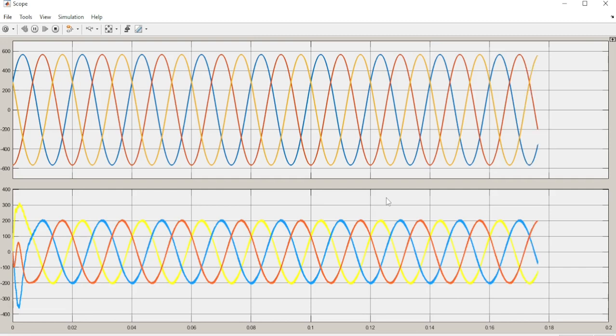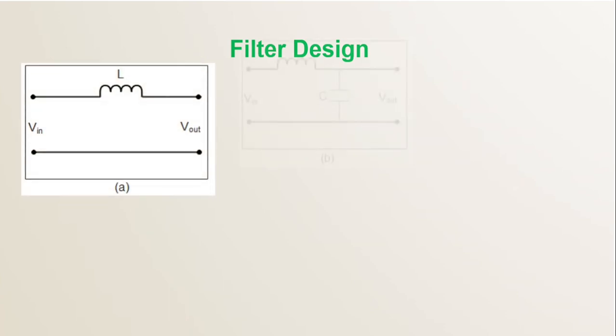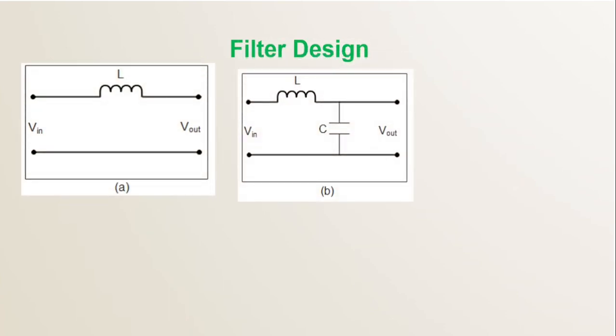This should be below the levels allowed by the IEEE standards. It should be less than five percent. The low-pass filters range from the L filter, LC filter, LCL filter, and LCCL filter, and they can get as complex as they can depending on the system that you are designing.